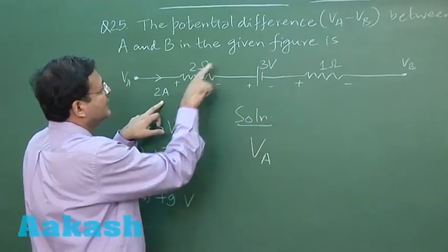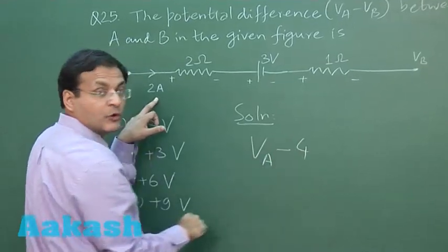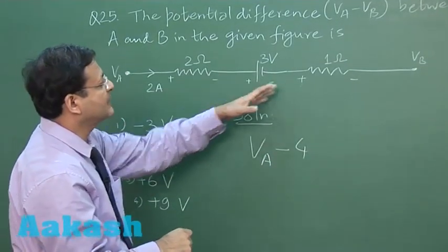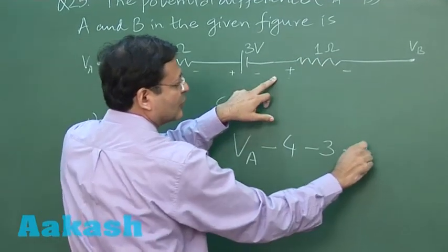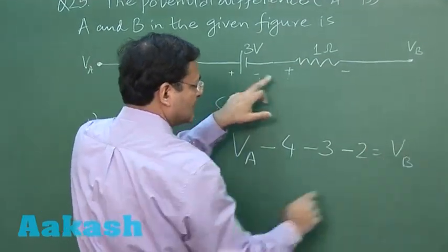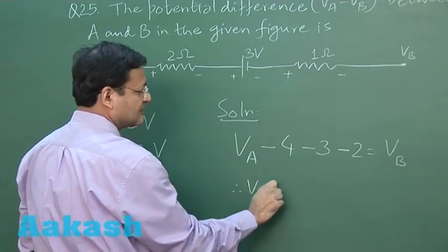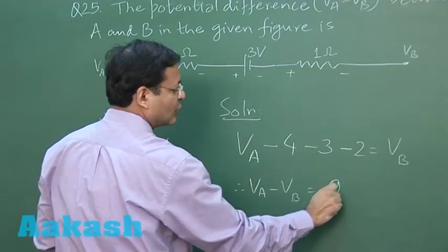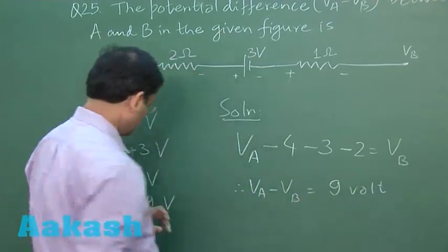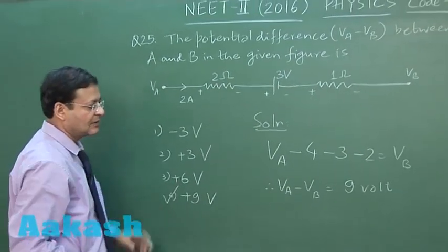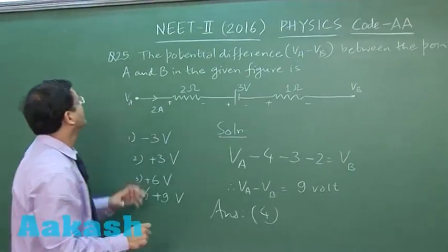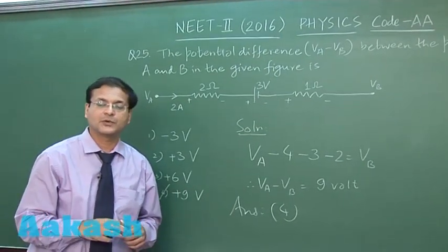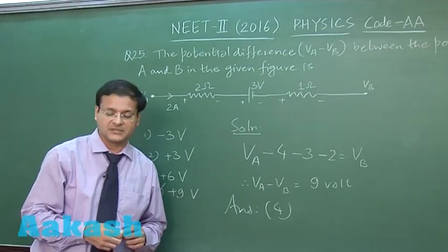So if you start writing down the equation starting from point A, so you will be writing as VA minus I into R, that is minus 4 volt. Then you are jumping here across, that is minus 3 volt, and then you will be reaching point B. So VA minus VB, this will be simply 9 volt. So which option is 9 volt? This is fourth option is 9 volt. So I will be marking answer 4 for this question 25.